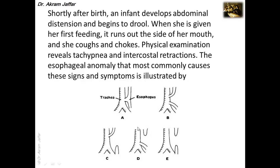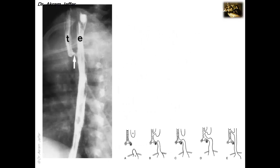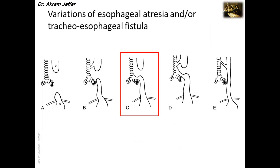This is again the commonest type of tracheoesophageal fistula with esophageal atresia: atresia of the proximal part of the esophagus with a tracheoesophageal fistula connecting the distal part of the esophagus to the trachea.